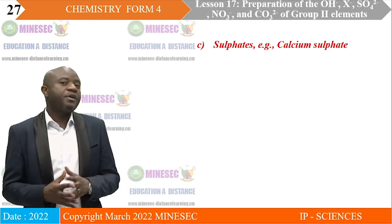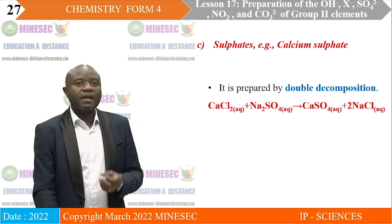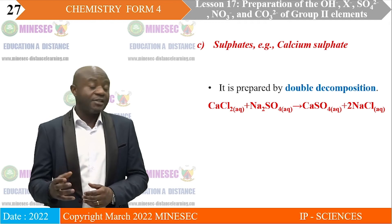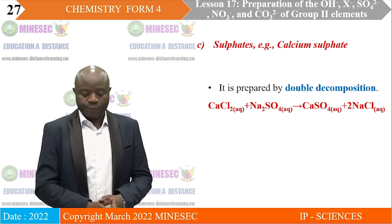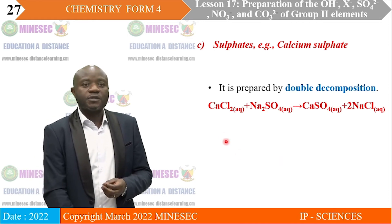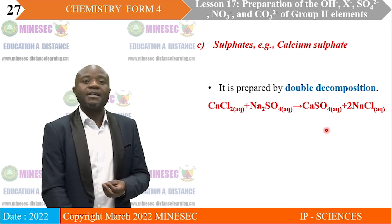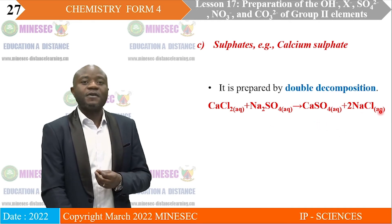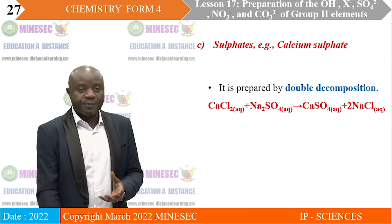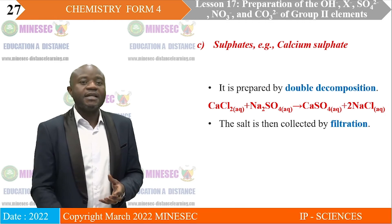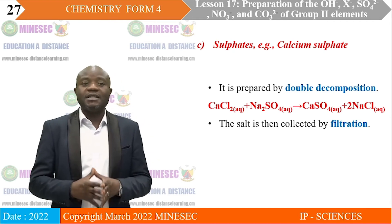C. Preparation of sulfate: Calcium sulfate, like calcium carbonate, is also prepared by double decomposition. Calcium chloride and sodium sulfate are reacted to produce calcium sulfate and sodium chloride. The calcium sulfate prepared by this method is collected by filtration, given that it is insoluble in water.